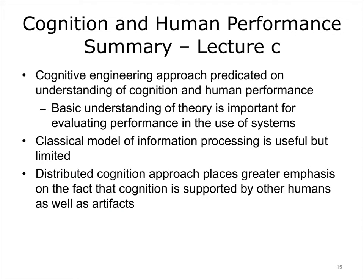The lectures in this series introduced cognitive theory in relation to a cognitive engineering approach to human-computer interaction and human factors. We considered a classical model of information processing and introduced different ways to understand knowledge. The concept of mental models is particularly important. In recent years, a distributed cognition approach has emerged as an alternative to the classical model of information processing. Thank you.